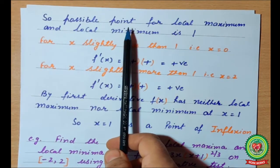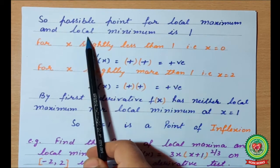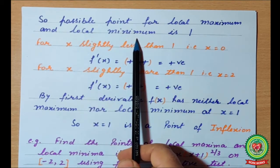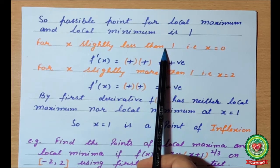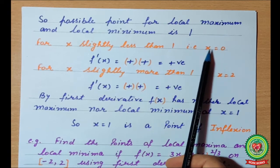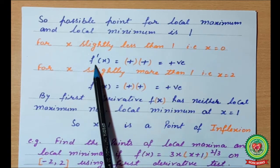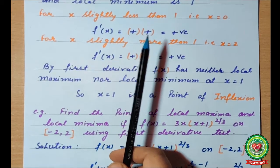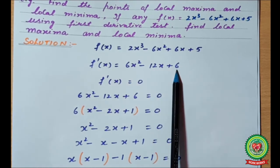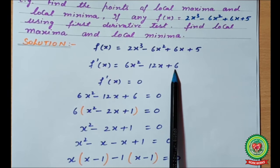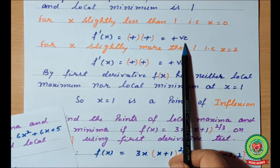So the possible point for local maxima and local minima is only x = 1. We will put the nearest value, not the exact value. For x slightly less than 1, we put x = 0 in f'(x). When we substitute x = 0, the result is positive — giving us a positive sign.